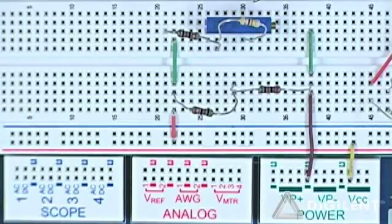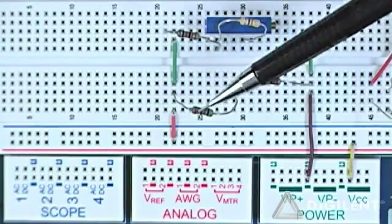Now on the other side of the bridge, what I'm ultimately going to do is connect my strain gauge between this node and this node. Now since I'm using two 100 ohm resistors here,